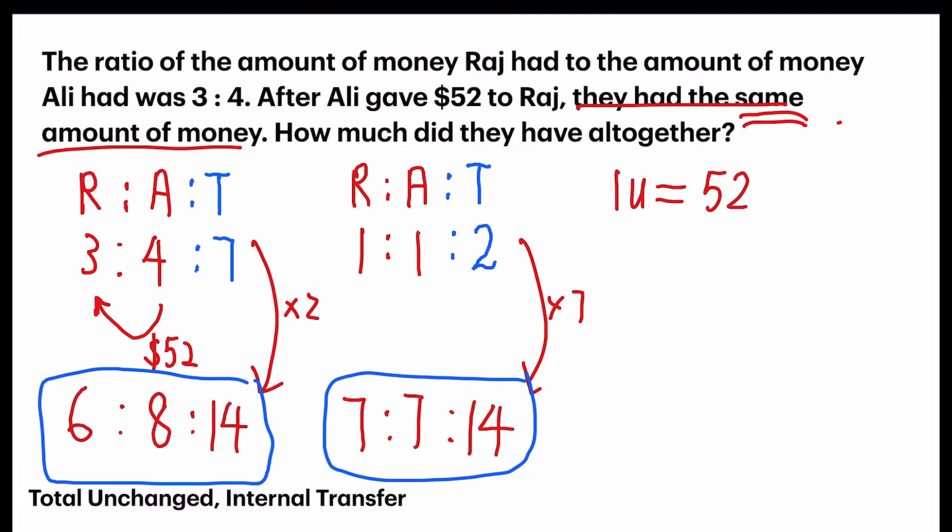Now, back to the question. How much did they have all together? Well, in both ratios, it's 14 units for both, because internal transfer, the total remain unchanged. So, we are just finding 14 units. 52 times 14. Since we know 1 unit, the question can be easily solved. And our answer is $728. And that's it.